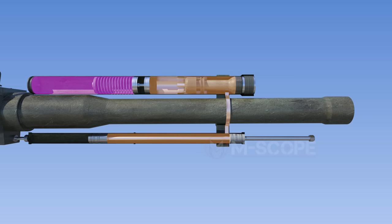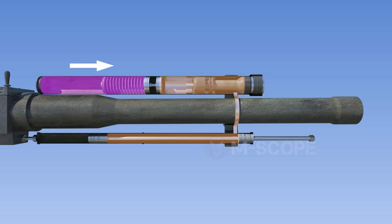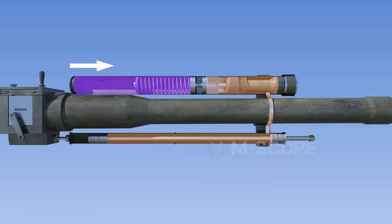Inside the recuperator, the oil compresses the nitrogen gas, and when the recoil stops, the compressed nitrogen gas again expands. Then the cannon comes back to its original position.